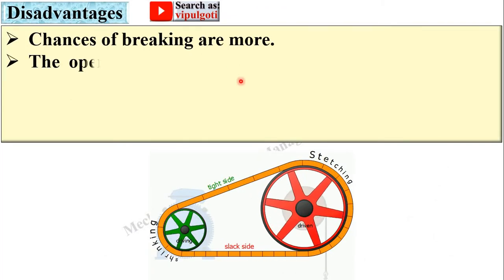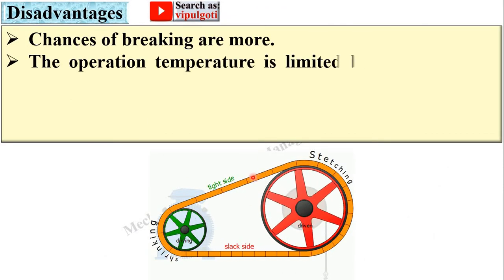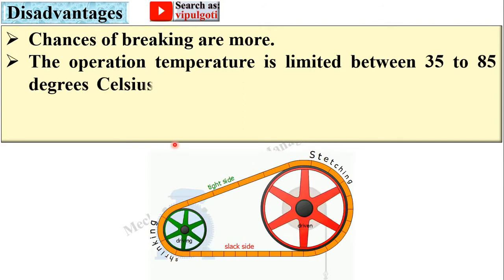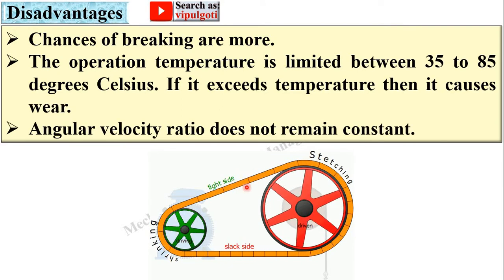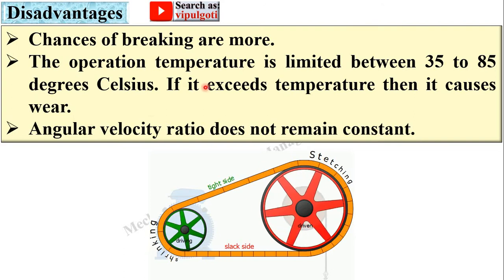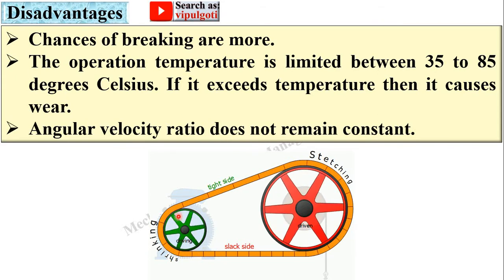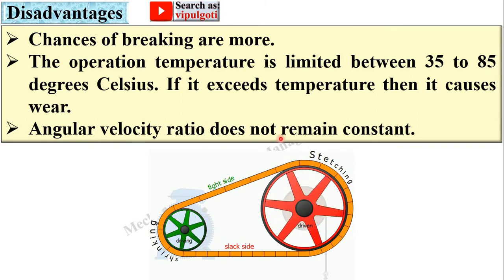Chances of breaking are more because the material is generally leather. The operation temperature is limited between 35 to 85 degrees Celsius only. If it exceeds this temperature, then it causes wear. Angular velocity ratio does not remain constant due to slip, and that's why it is sometimes called a non-positive drive.